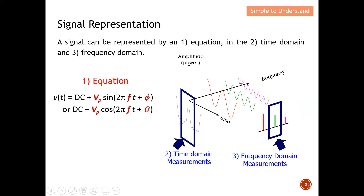Let's take a look at this diagram here. This diagram shows the 3D view of a signal. You can see that the signal changes with time, frequency, and also amplitude. Based on the different view, we have different dominant factors. For example, when we look at this view — time versus amplitude — this is what we call time domain. At this view, we can see how the signal changes with time.